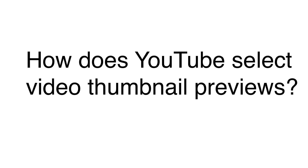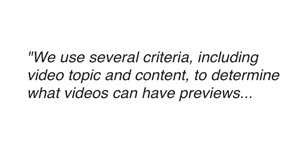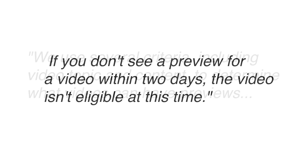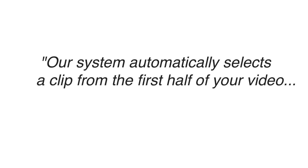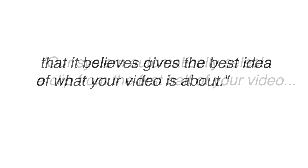How does YouTube select video thumbnail previews? YouTube says they use several criteria including video topic and content to determine what videos can have previews. If you don't see a preview for two days, the video is not eligible at this time. Their system automatically selects a clip from the first half of your video that it believes gives the best idea of what your video is about.